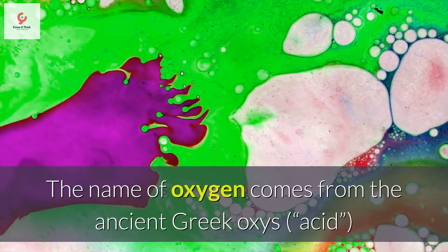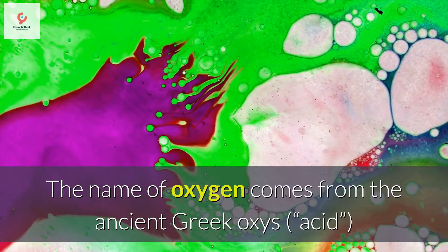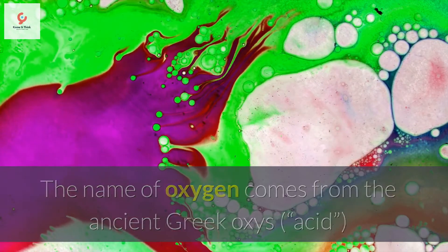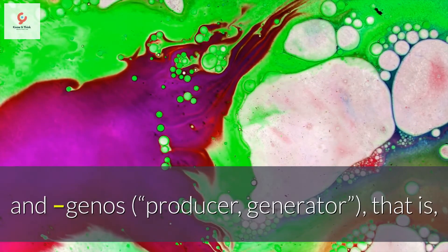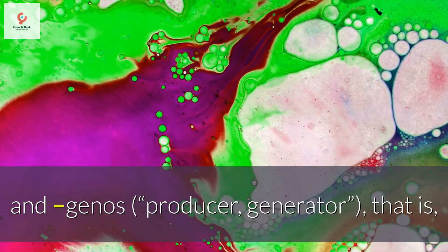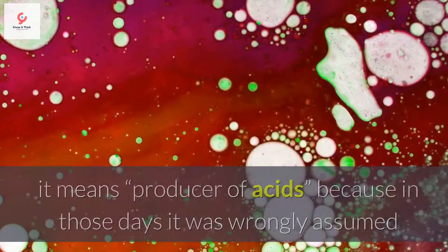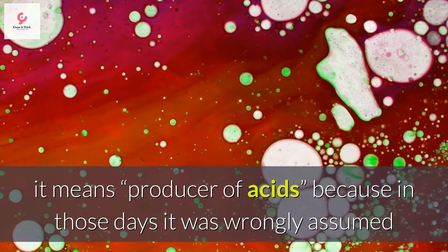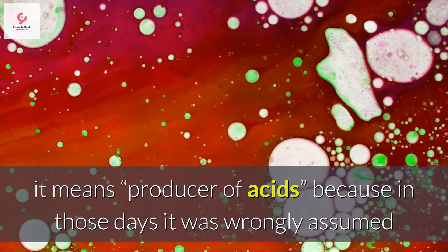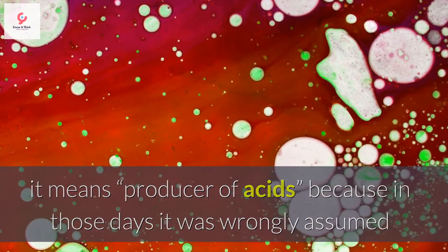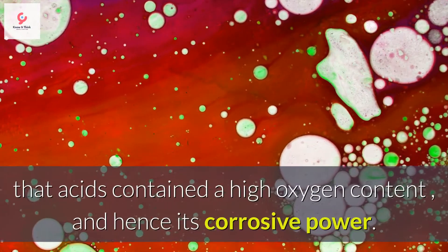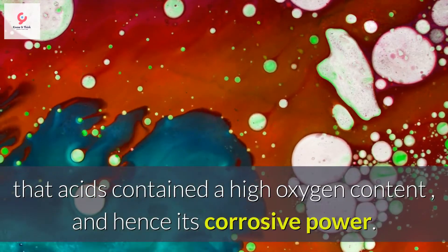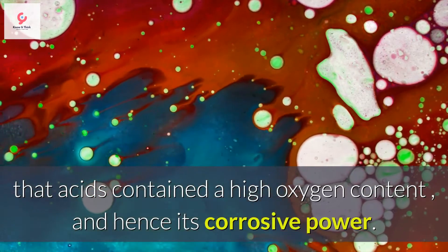The name oxygen comes from the ancient Greek oxys, meaning acid, and genos, meaning producer or generator. It means 'producer of acids' because in those days it was wrongly assumed that acids contained a high oxygen content, and hence their corrosive power.